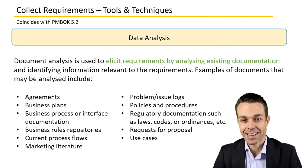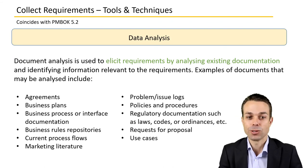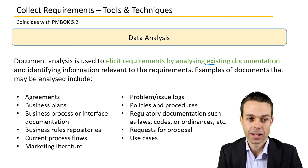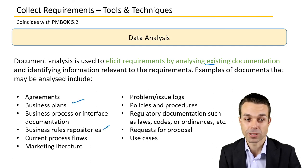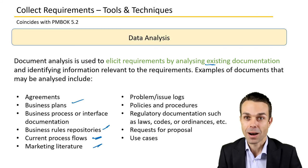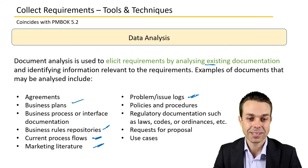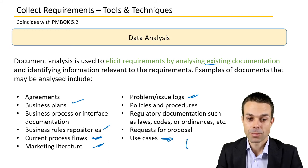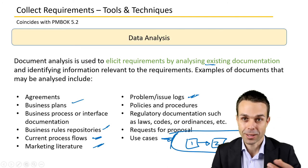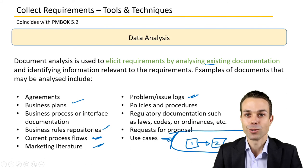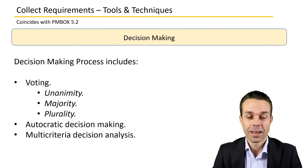We'll need to analyze that data as well. Document analysis is used to elicit requirements by analyzing existing documentation and identifying information relevant to the requirements. Documents that might be analyzed include business plans, business rules, processes, current process flows, marketing literature, existing problem or issue logs, and use cases — how something is being used, what steps are involved, and what problems the end customer is running into. That's all part of your data analysis for collecting requirements.